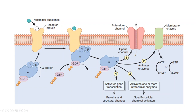Once GTP is bound to the alpha subunit, this alpha subunit dissociates from the other two subunits — this is the active alpha subunit. This active alpha subunit can in various ways affect the postsynaptic cell. In one case the alpha subunit can lead to the opening of a channel — for example, a potassium ion channel. Or it may activate a membrane-bound enzyme, which may be adenylyl cyclase that converts ATP to cyclic AMP, or guanylyl cyclase that converts GTP to cyclic GMP. This cyclic AMP or cyclic GMP can again activate various proteins, particularly protein kinases. The activated alpha subunit may also activate other additional intracellular enzymes, and in some cases it can even activate gene transcription, producing new proteins and bringing structural changes to the postsynaptic cell.